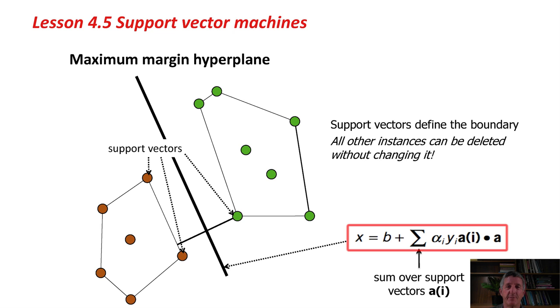There's an equation, a simple equation, and this is the last equation in this course. A simple equation that gives the formula for the maximum margin hyperplane as a sum over the support vectors: x = b + Σ αⱼ y ã(j) • a. These are kind of a vector product with each of the support vectors and the sum there. It's pretty simple to calculate this maximum margin hyperplane once you've got the support vectors. It's a very easy sum. Like I say, it only depends on the support vectors. None of the other points play any part in this calculation.